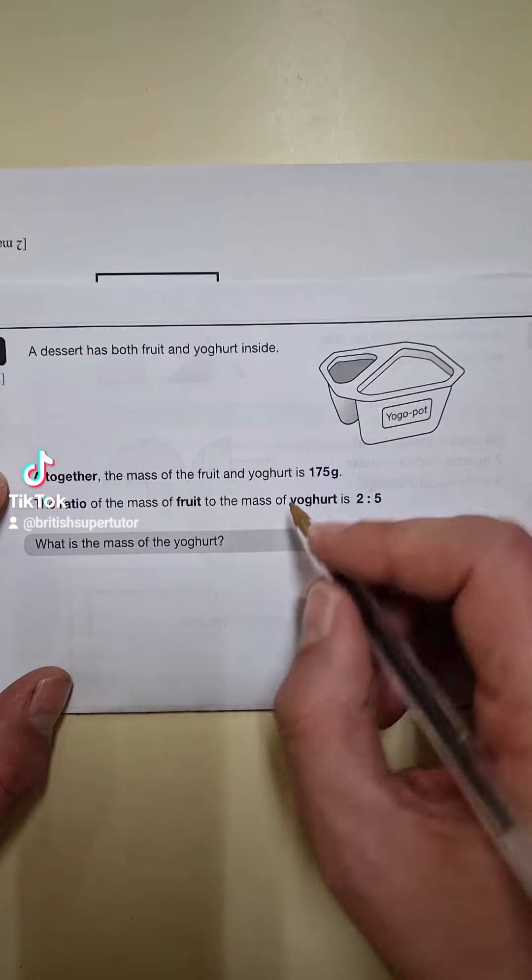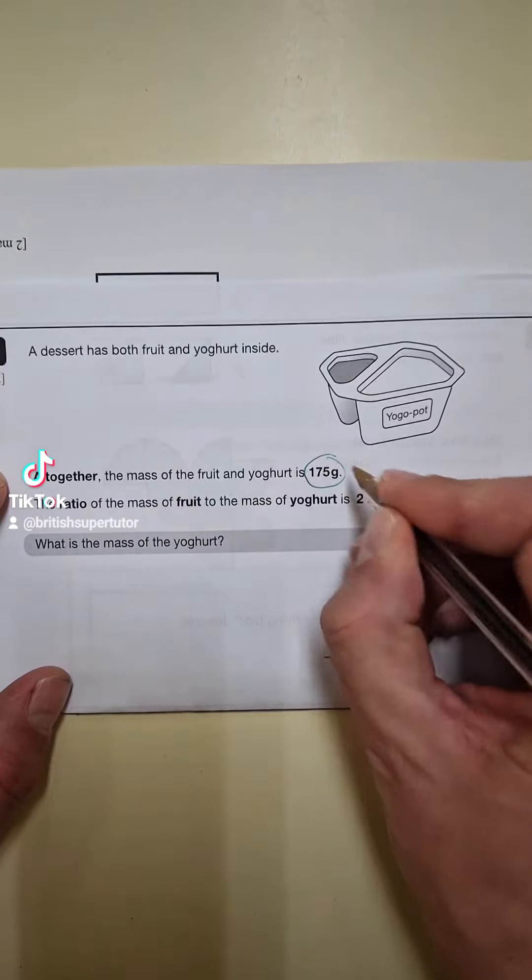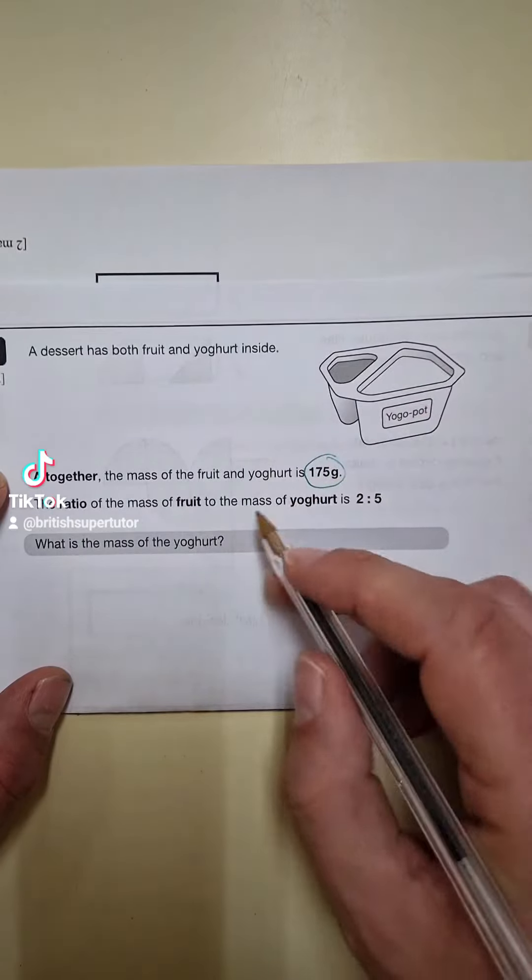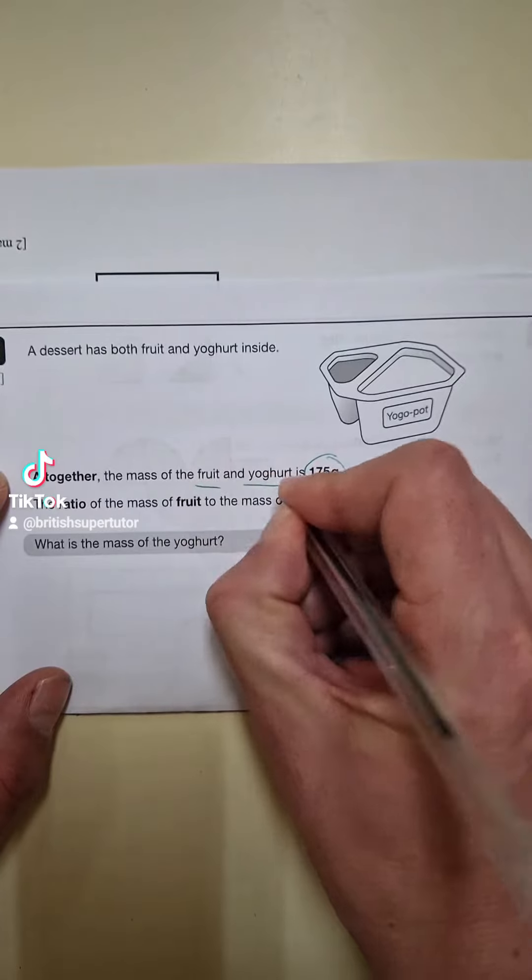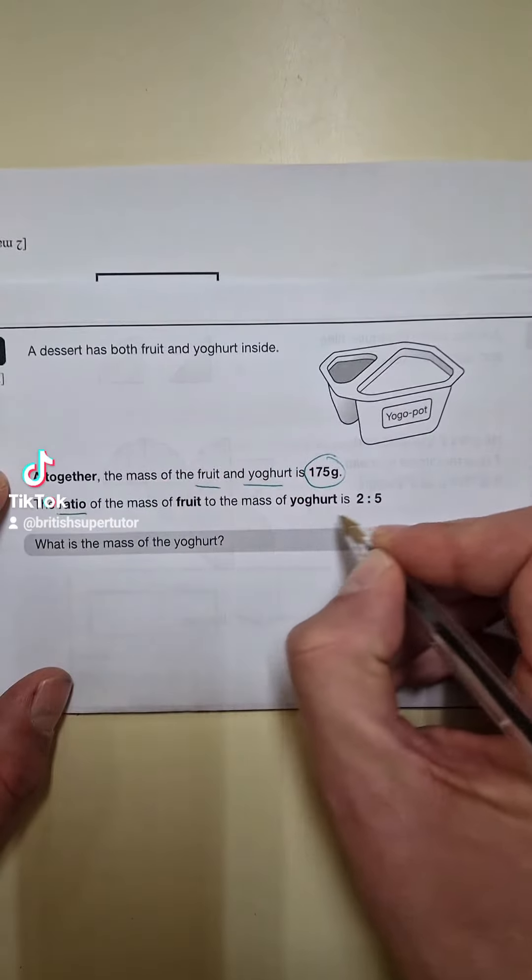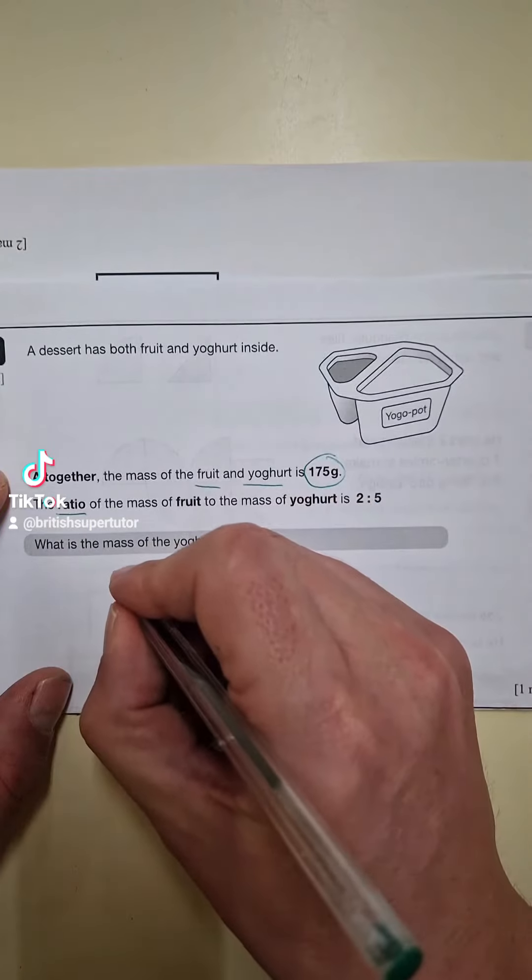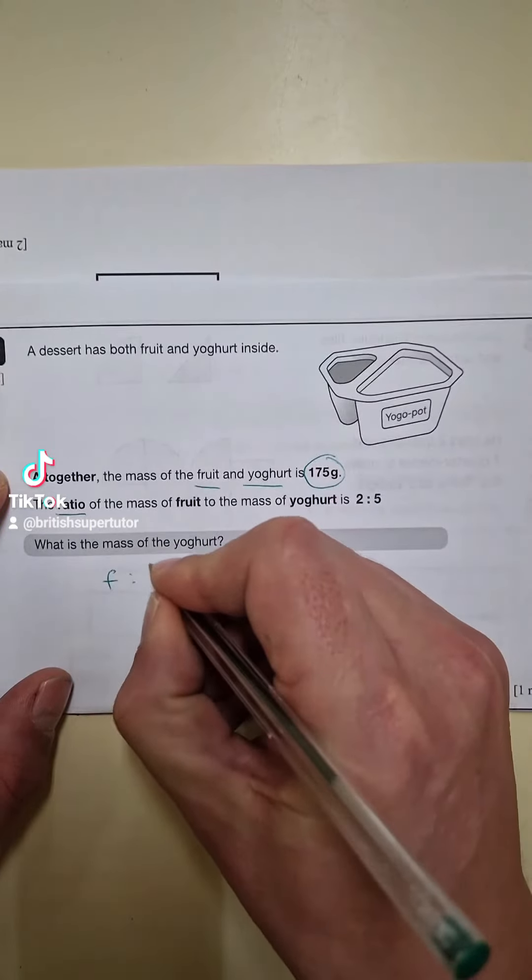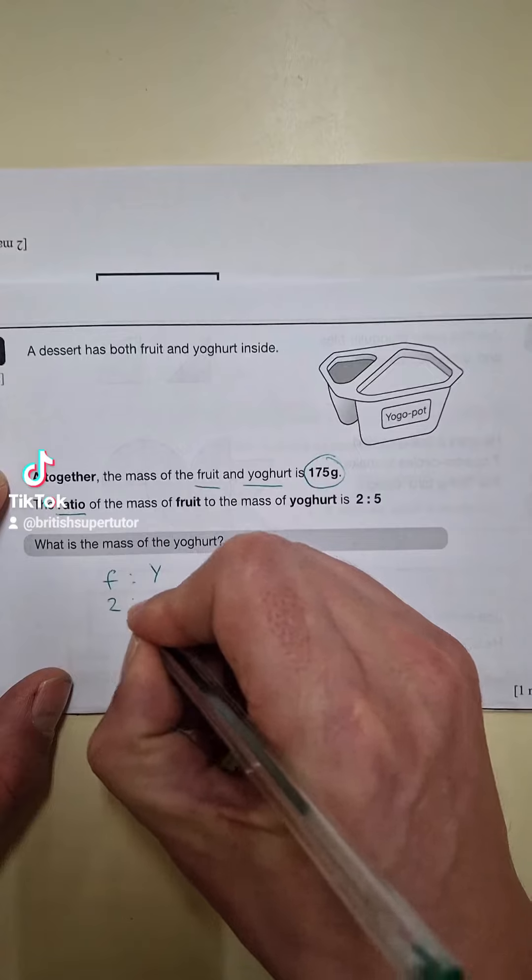All together, the mass of the fruit is 175 grams. So all of this together, the fruit and the yoghurt is 175 grams. The ratio of the mass of fruit to the mass of yoghurt is 2 to 5. So we've got fruit to yoghurt, the ratio is 2 to 5.